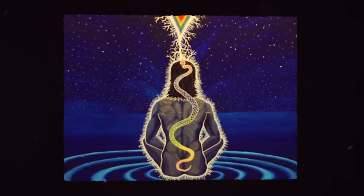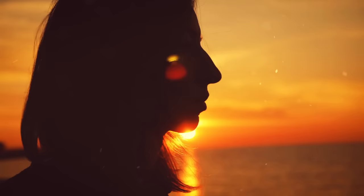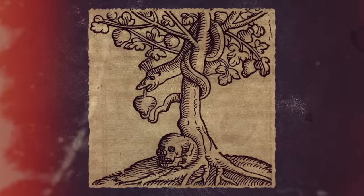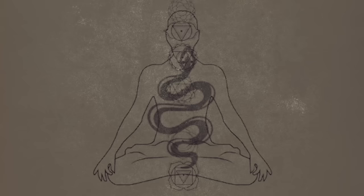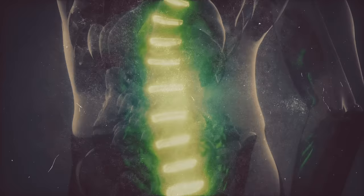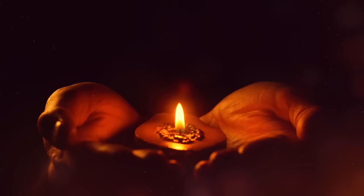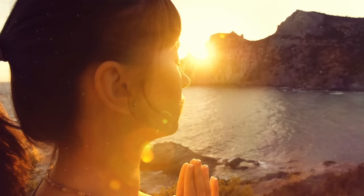Often depicted as a coiled serpent at the spine's base, the kundalini remains dormant in many, awaiting the right conditions for its awakening. Much like the serpent in the Garden of Eden, the kundalini serpent holds great power. When awakened, it can rise through the spine, moving through the chakras or energy centers. This journey symbolizes spiritual growth and eventual enlightenment.